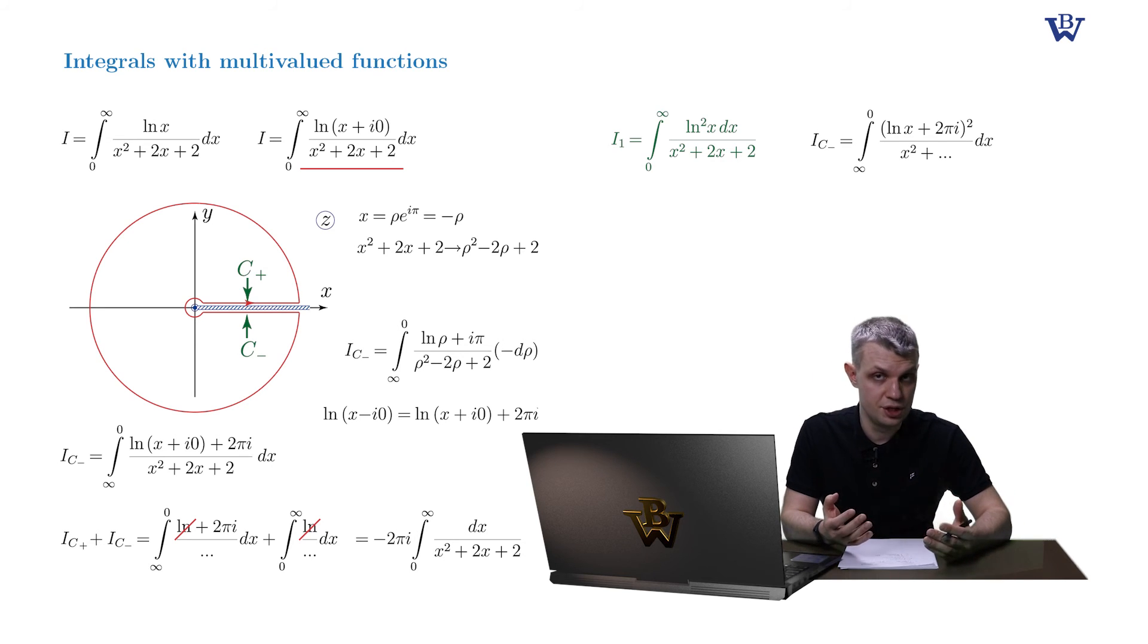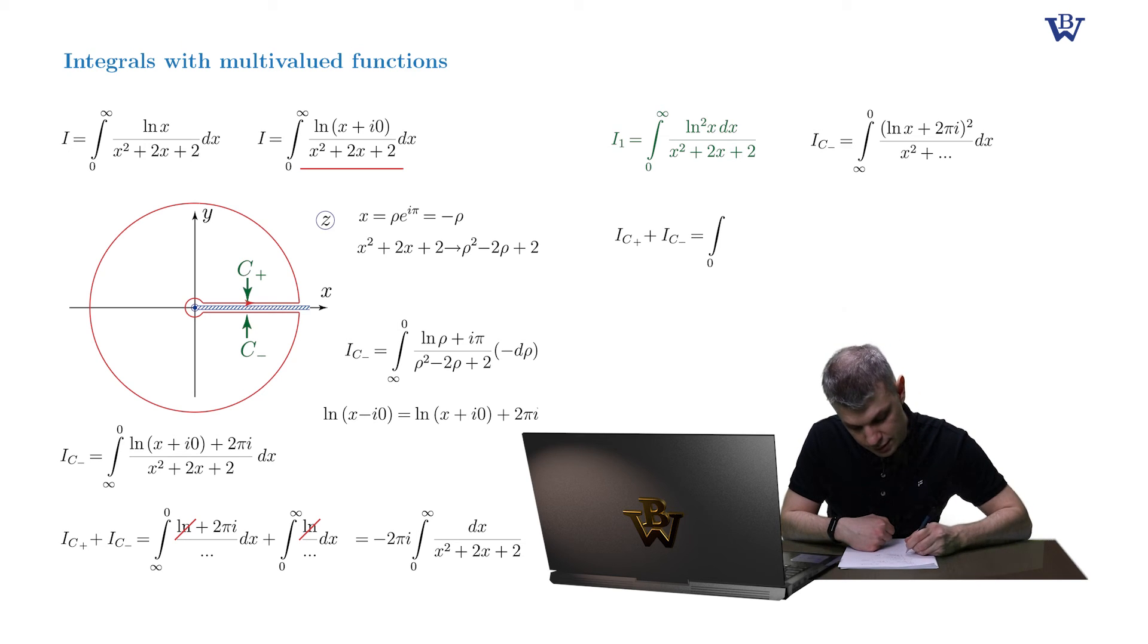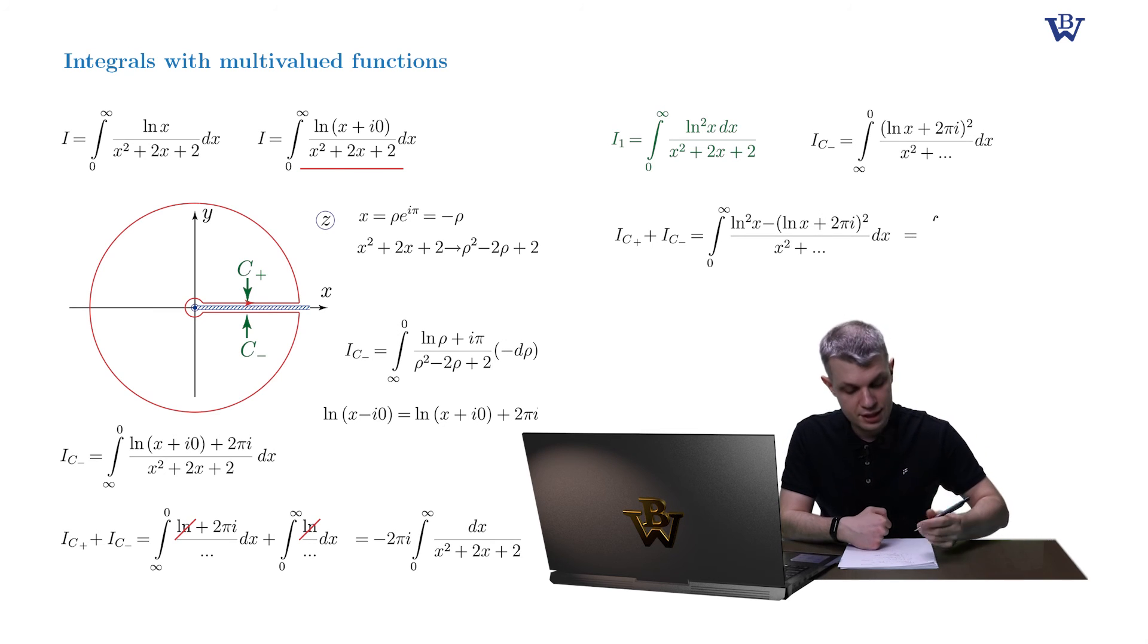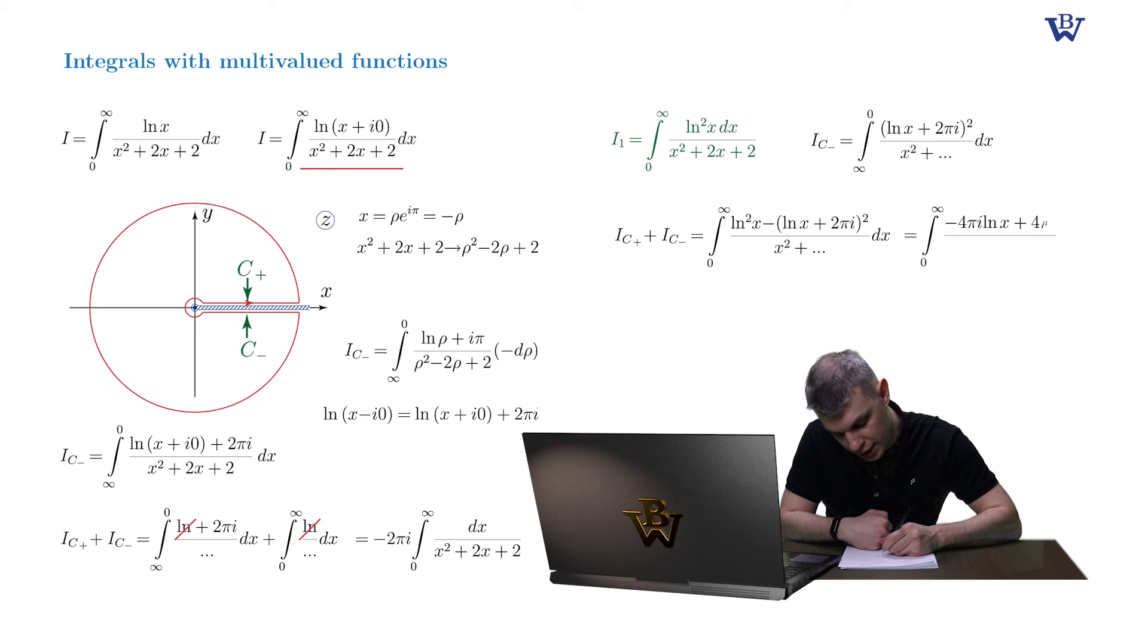So once we interchange the limits of integration and combine it with our original integral, denominators will subtract differently. And now after cancellation we'll obtain minus 4 pi i times log x plus 4 pi squared in the numerator, dx.